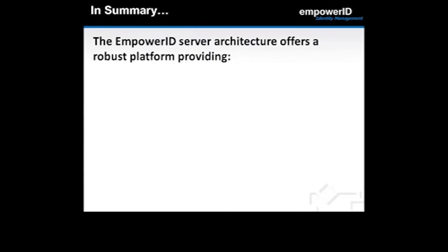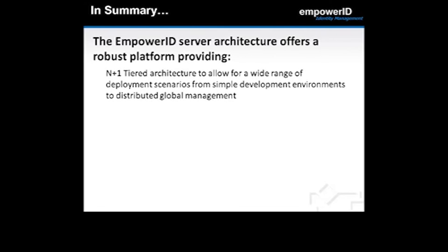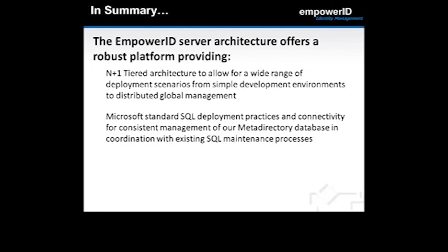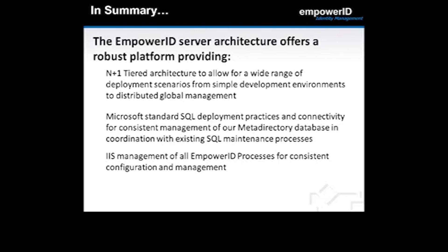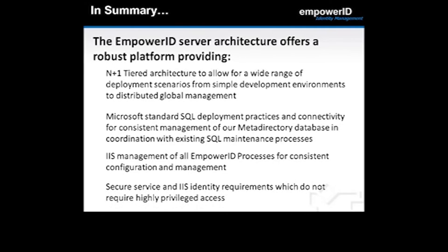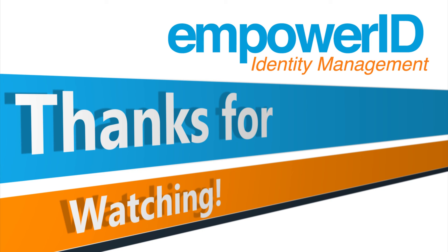In summary, the Empower ID server architecture is designed to offer a robust platform providing an N plus one tiered architecture for a wide range of deployment scenarios, from simple to distributed global management. We utilize Microsoft's standard SQL deployment practices for consistent management of our meta directory database, and IIS management of all Empower ID processes for consistent configuration. Finally, a secure service and IIS identity architecture does not require highly privileged access to be exposed. Thanks for watching this Empower ID 101 presentation on server architecture — come back later for additional videos on other topics.